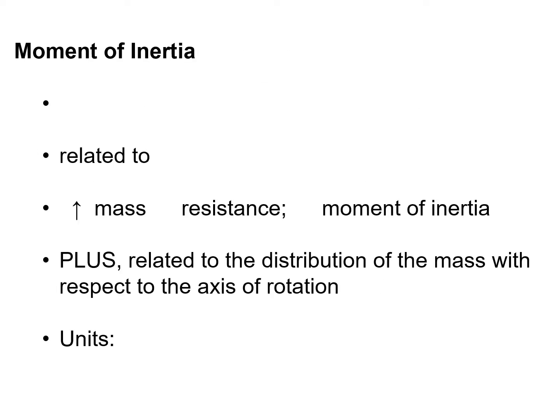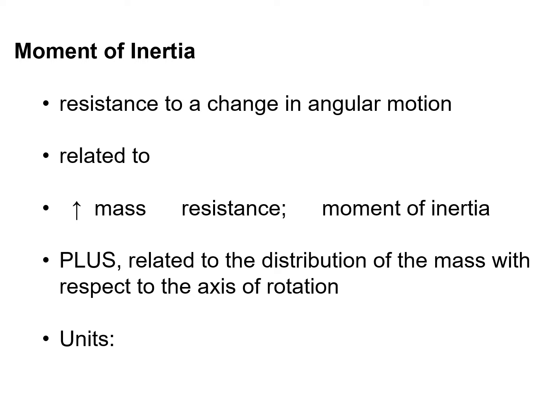Let's first talk about our moment of inertia. It is the resistance to change in angular motion, much like our linear inertia is resistance to change in linear motion. It's related to mass — with an increase in mass we see an increase in resistance, which leads to an increase in moment of inertia. If something has more mass than another object, it's harder to change its angular velocity or angular motion.